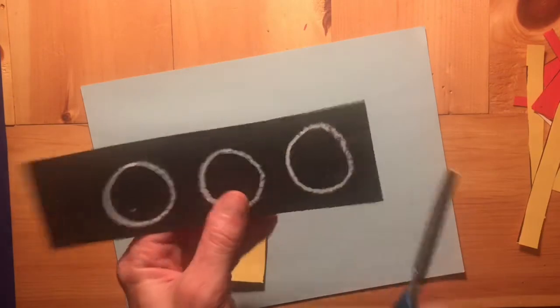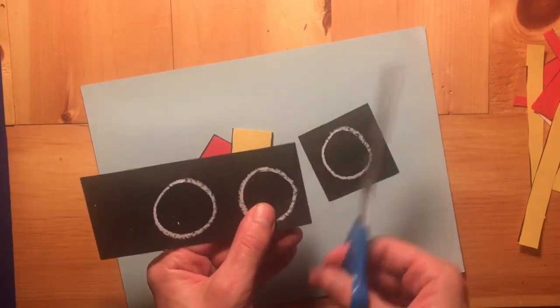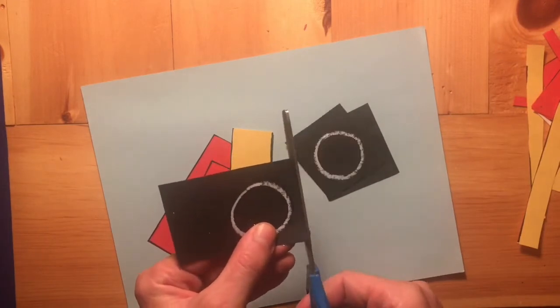Now let's grab the black strip of paper with our wheels on it and let's do something to make our job a little bit easier. Let's cut the wheels out into their own sections.